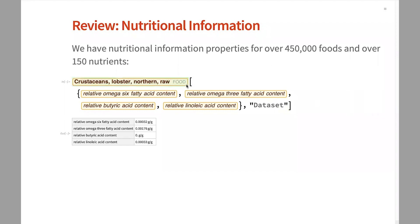This right here is what we call an explicit food — a specific instance of a food that you could go to the store and buy. We also have a different implementation of food where you can ask for the general idea, like all raw northern lobster crustaceans, and it will give you an averaged value for whatever nutrients you're asking about. So there are two different ways to use it.